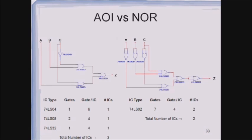These are the advantages associated with universal gates. By using universal gates, we can reduce the number of gates and the number of ICs. As the number of ICs is reduced, the die size of the electronic circuit is reduced and the cost of the circuit will also be reduced.